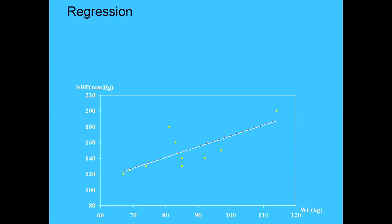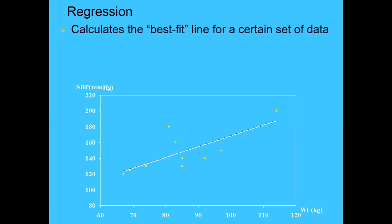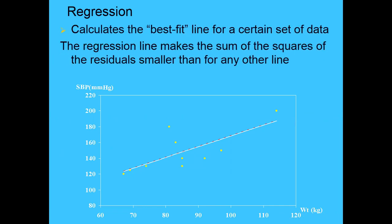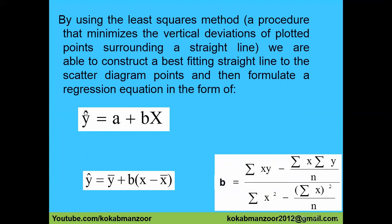In the last lecture we took this data, plotted the yellow dots, and drew a hypothetical line. Now we will draw the original best fit line using regression analysis with the help of the available data. There's a formula for it. This is called ŷ (y-cap), which is equal to a plus bX, where a is the intercept.